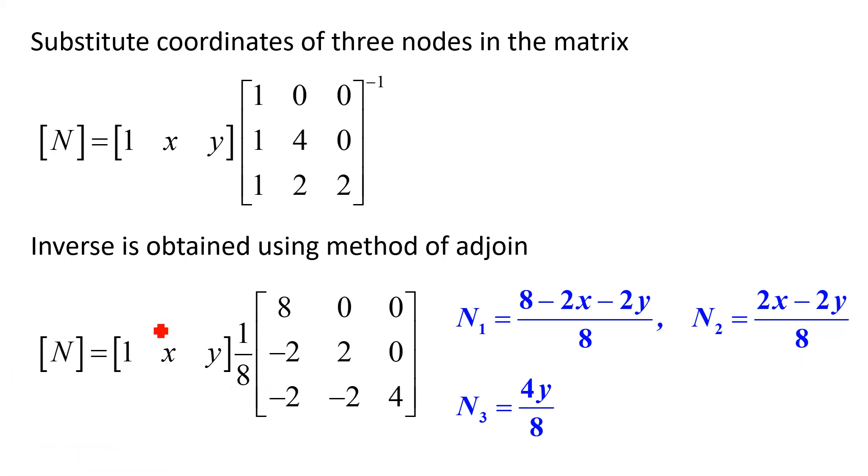Similarly, if you multiply this row with the second column of the inverse, you will get 1 into 0 is 0, X into 2 is 2X, Y into minus 2 is minus 2Y. So it is (2X minus 2Y) divided by 8. If you multiply that row with the third column of the inverse, we will get these two elements are 0, so directly Y into 4, 4Y divided by 8.